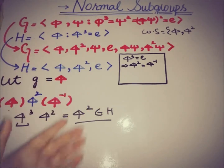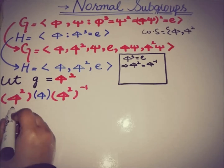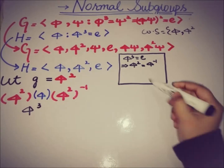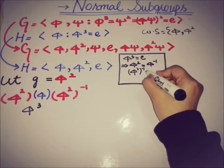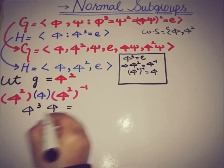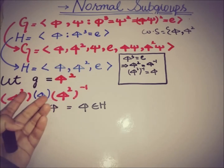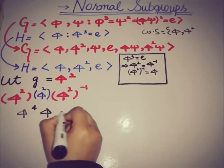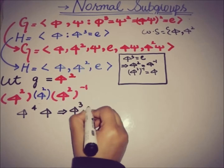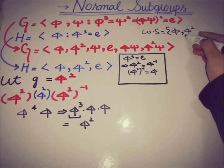Now we change the element to G = φ². Taking the first element of H, φ: φ²·φ·(φ²)-inverse. Since φ-inverse = φ², we get (φ²)-inverse = φ. So φ²·φ·φ = φ⁴ = φ³·φ = e·φ = φ, which is in H. For the second element φ²: φ²·φ²·φ = φ⁵ = φ³·φ² = φ², also in H. So for G = φ², the conjugate subgroup again coincides with H.